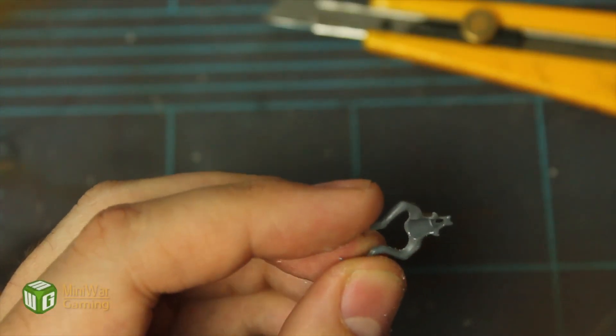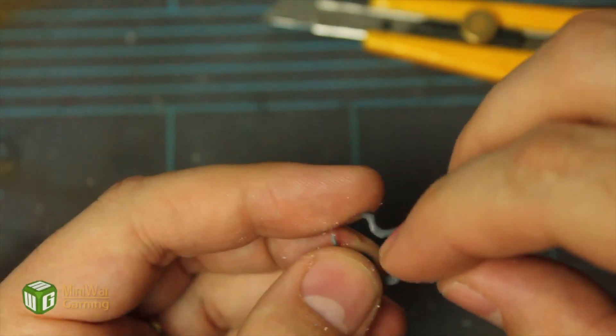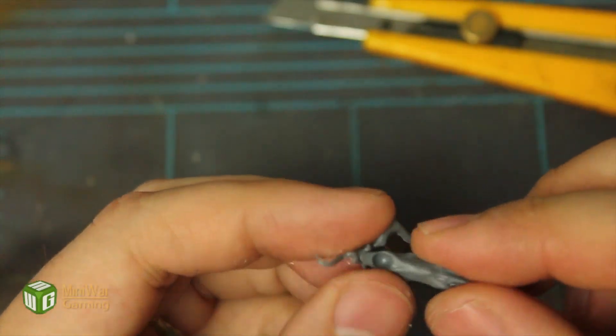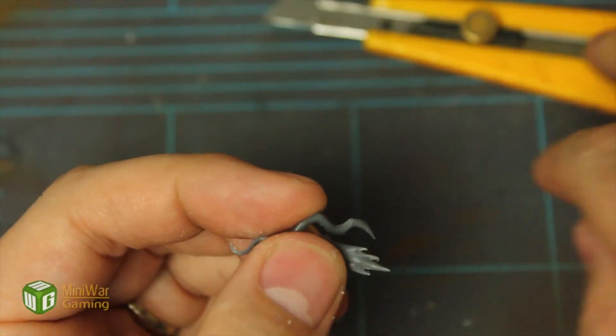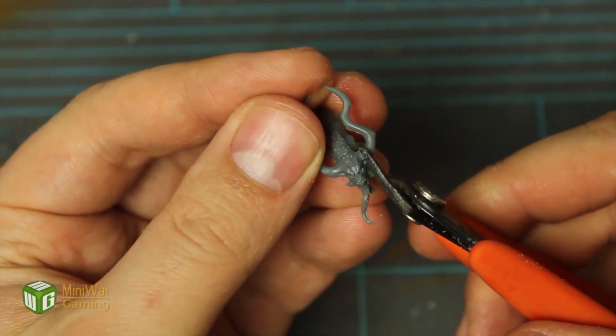Up next we're going to glue together the two parts of the head, which are the horns and face, and the other piece is the tongue and the back side of the head. Once that's dry, we're actually going to clip off the horns.